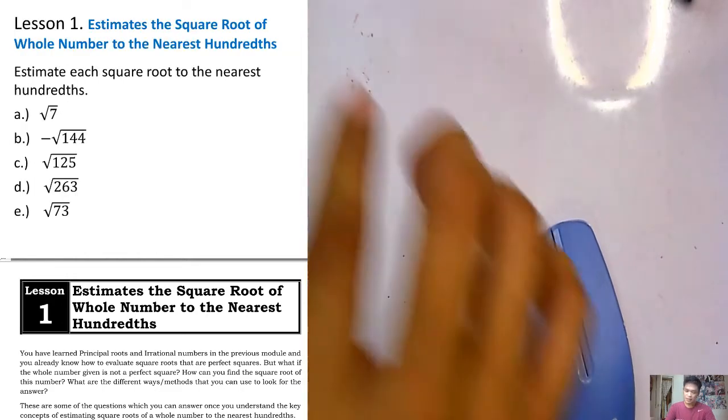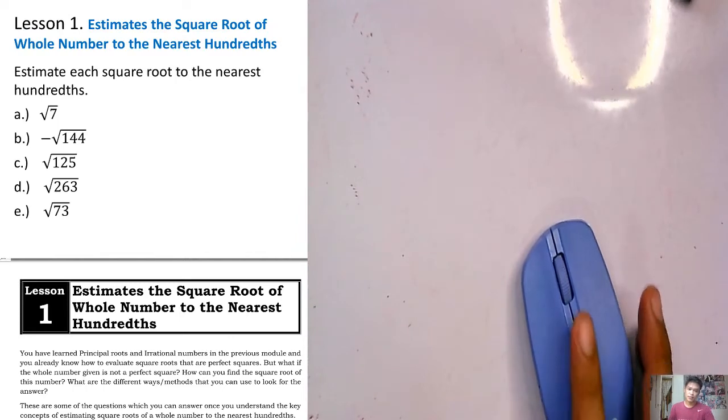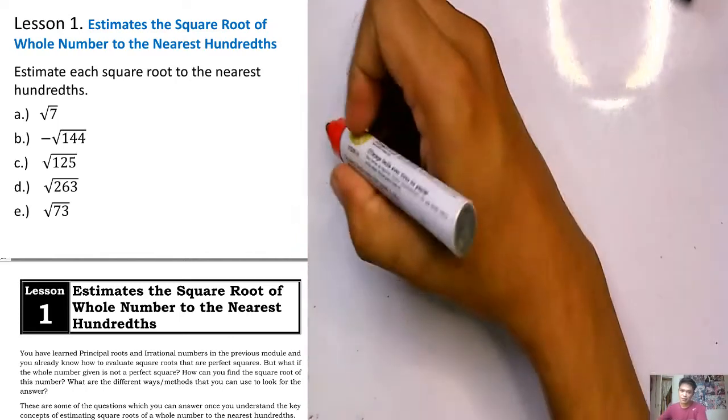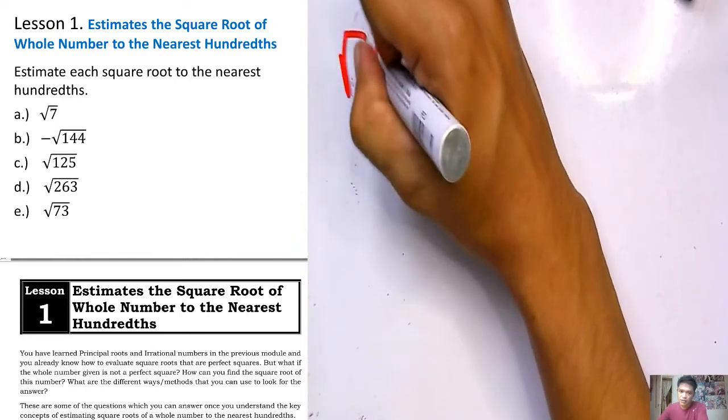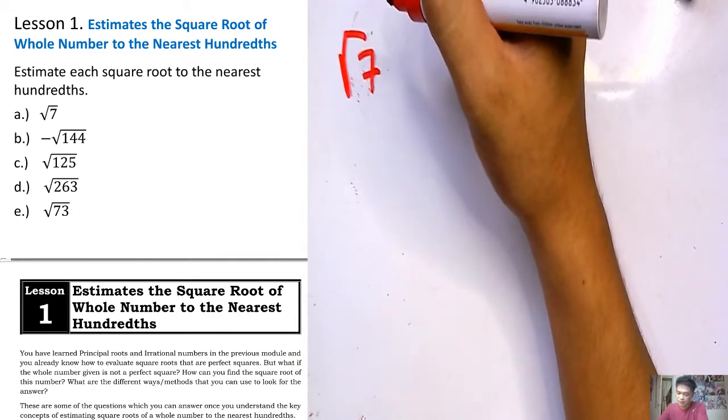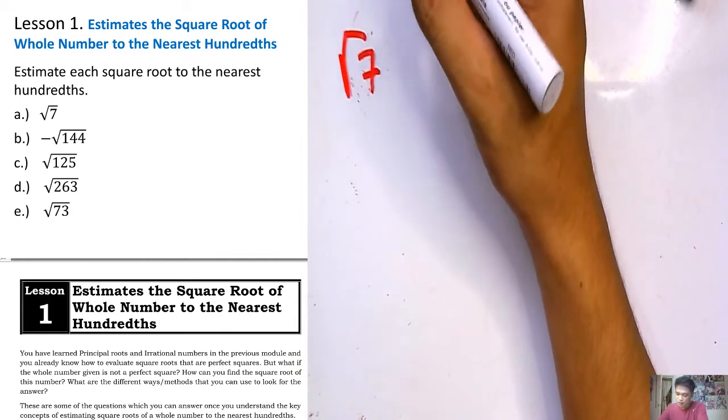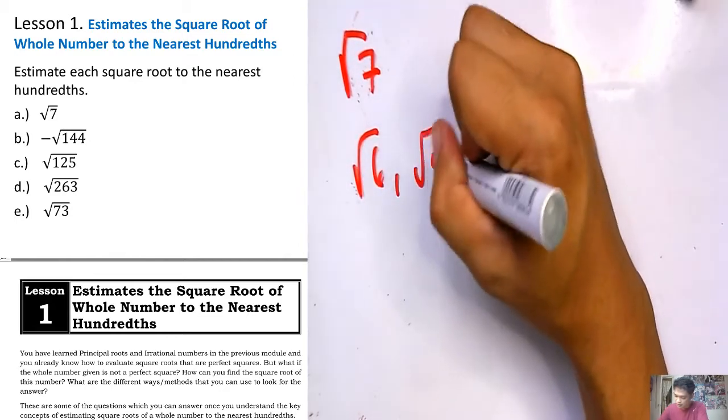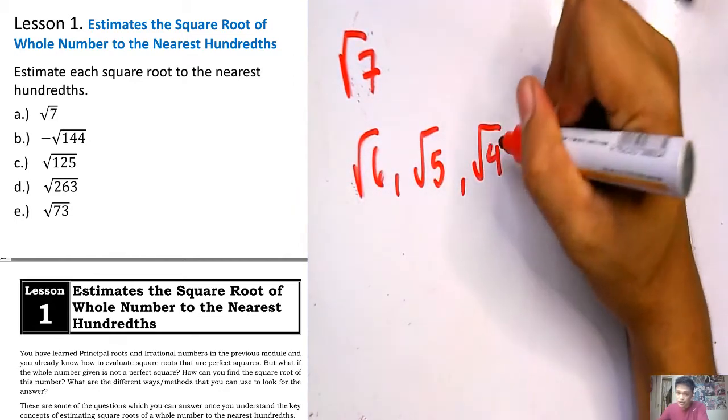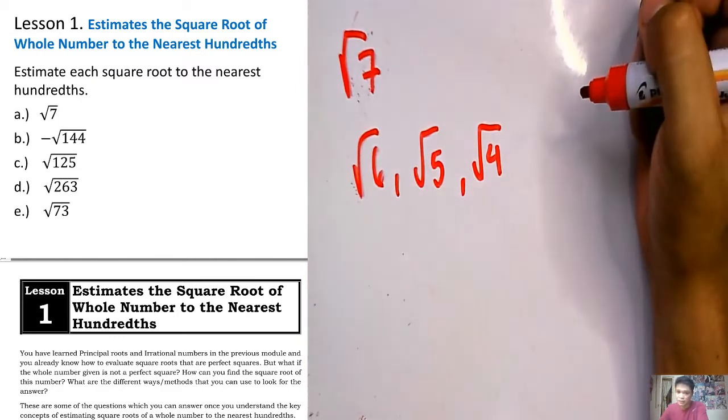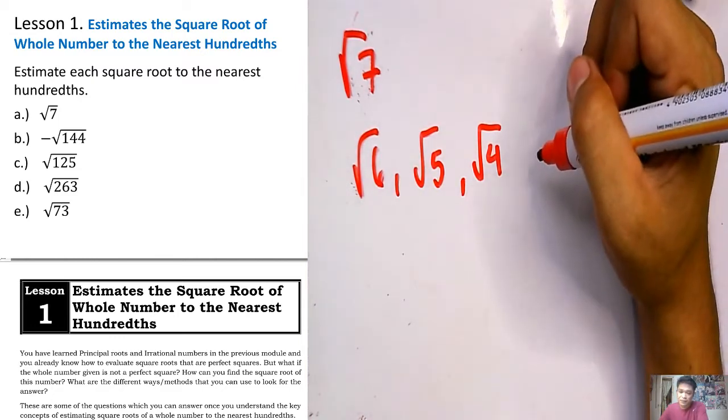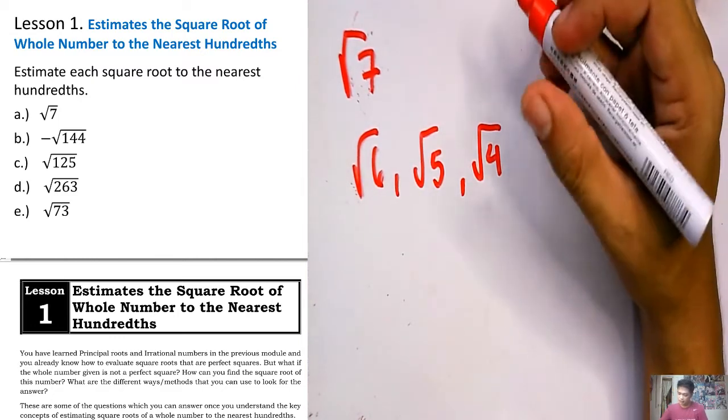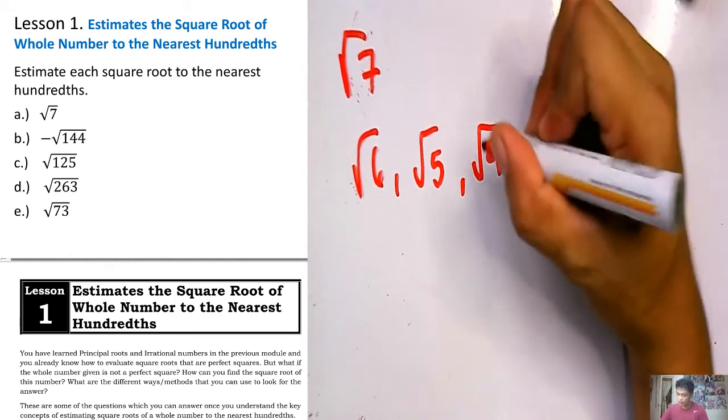Let's begin with the first example. We have square root of 7. So our focus is on square root of 7. What are the numbers before square root of 7? We have square root of 6, 5, 4, 3, 2, 1. But we end on a perfect square number.